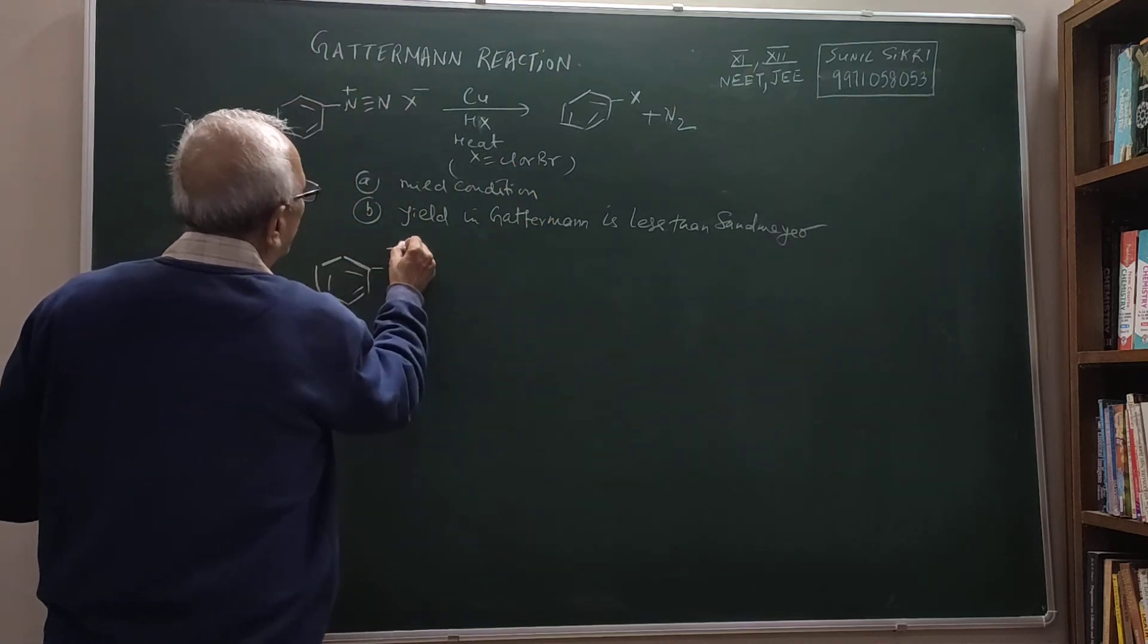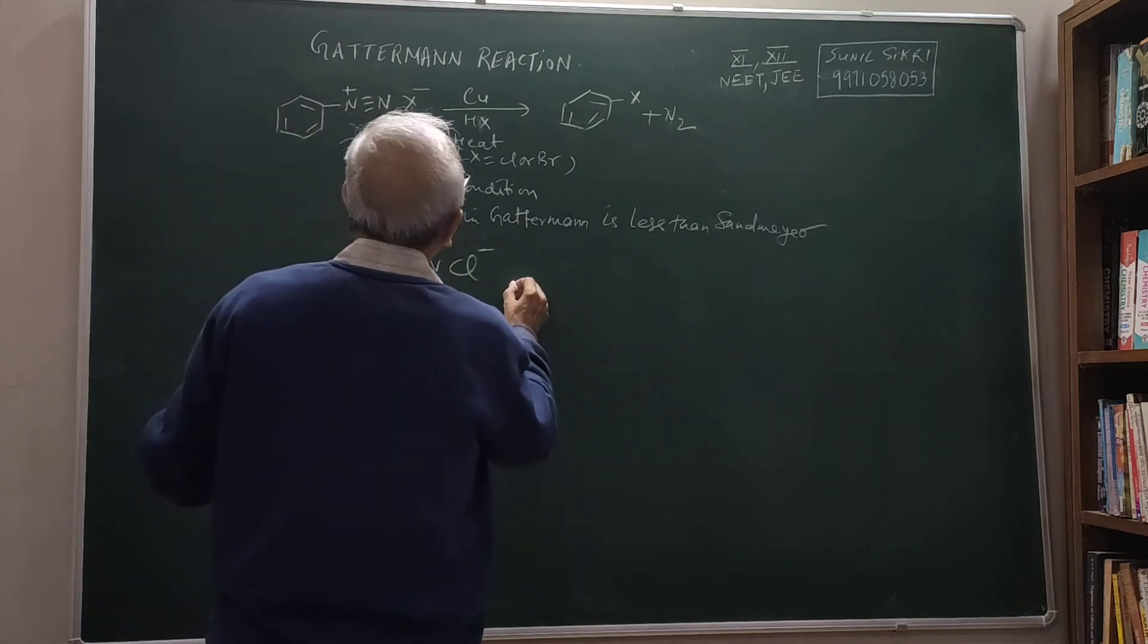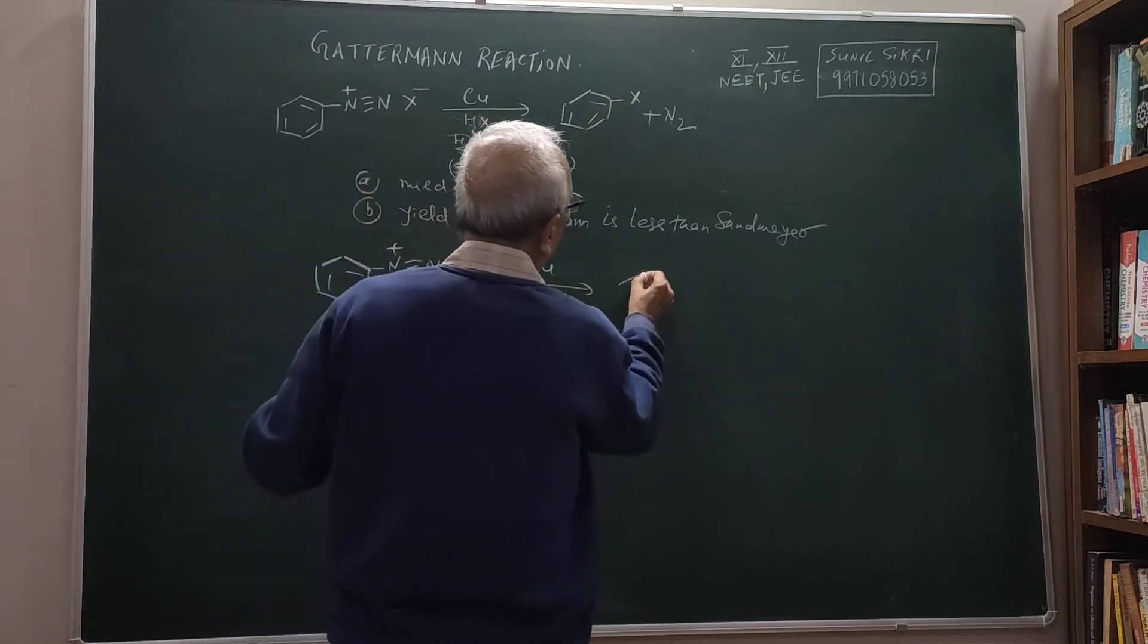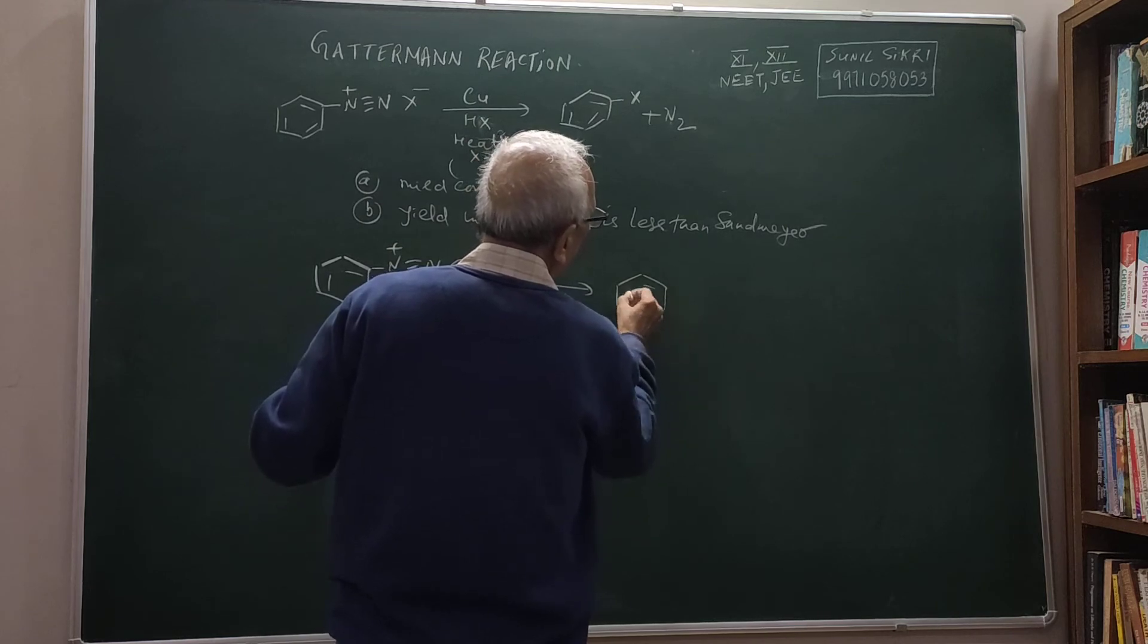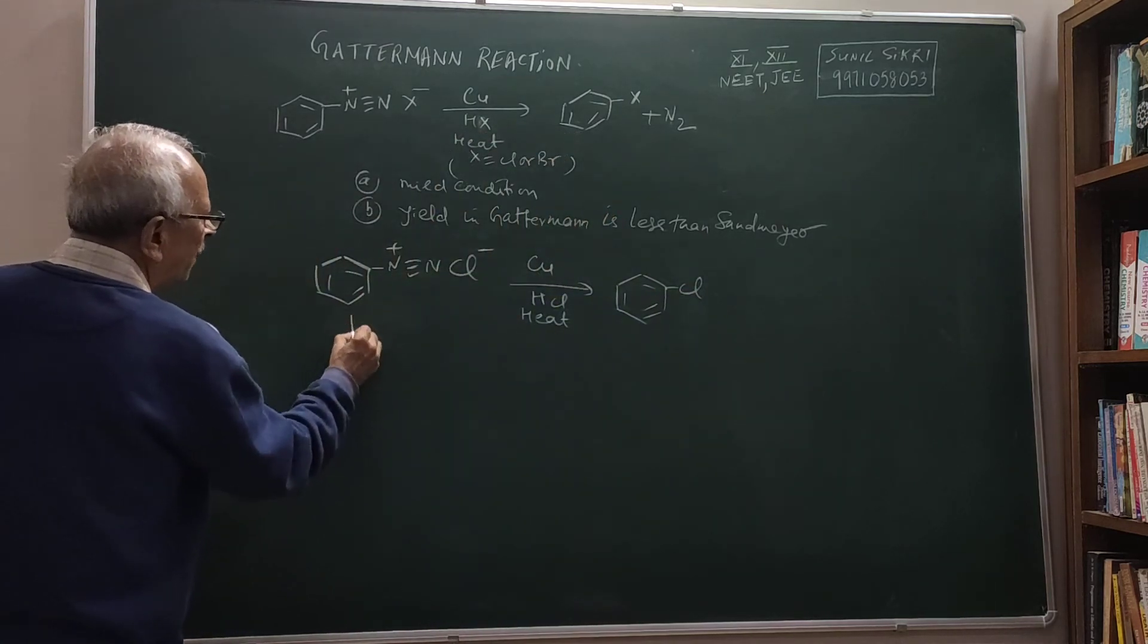So if I have this compound, this is my benzene diazonium chloride, and if I react this with copper powder and HCl, if I heat it, then what is the result? I am getting chlorobenzene. And you already know how to prepare this.